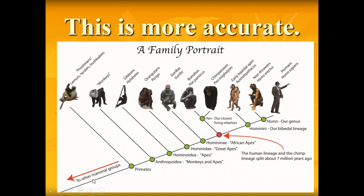The human lineage and the chimp lineage split about 7 million years ago — that's where they diverged. Here is the chimpanzee lineage and humans are up here. We are closely related to chimps, but we are farther away from gorillas, so they are not as similar to us. Still, gorillas are more closely related to us than orangutans or gibbons are. The farther away on this chart, the more distantly related we are.